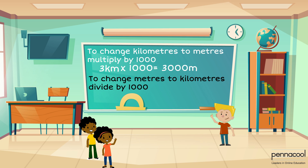To convert in the opposite direction, meaning meters to kilometers, we must divide by 1,000. For example, the 10,000-meter race in the Olympics is very long. Can you represent this distance in kilometers? Remember, converting from meters to kilometers, we must divide by 1,000. Therefore, 10,000 meters will be equal to 10,000 divided by 1,000, giving us a distance of 10 kilometers.